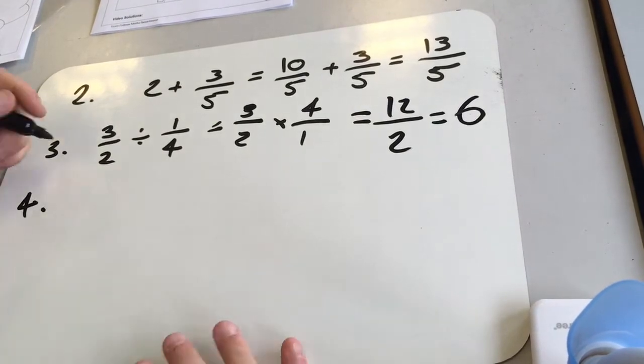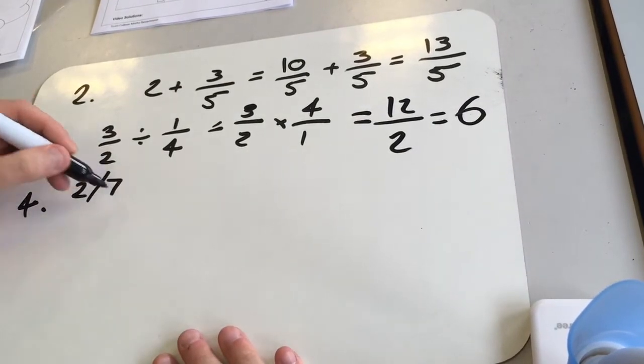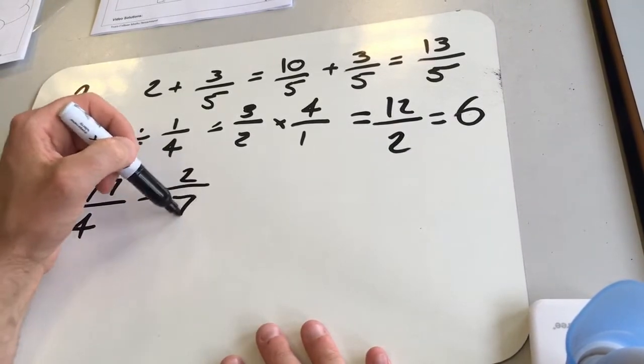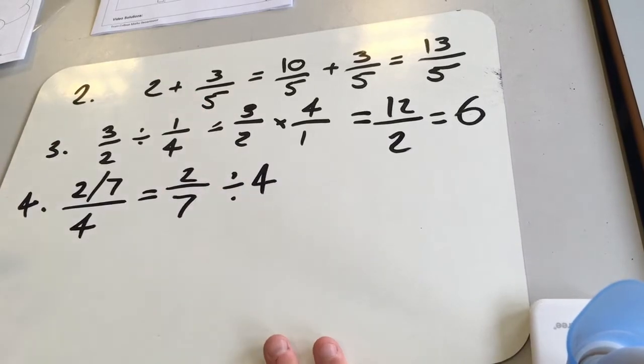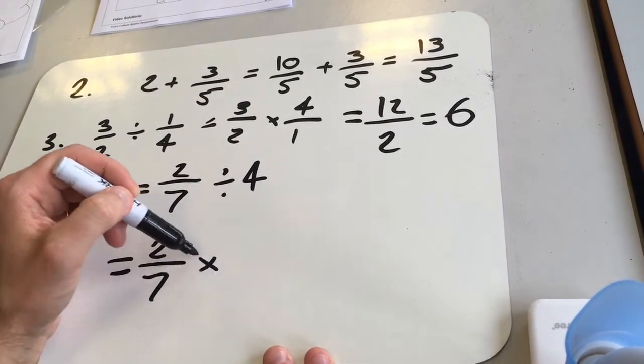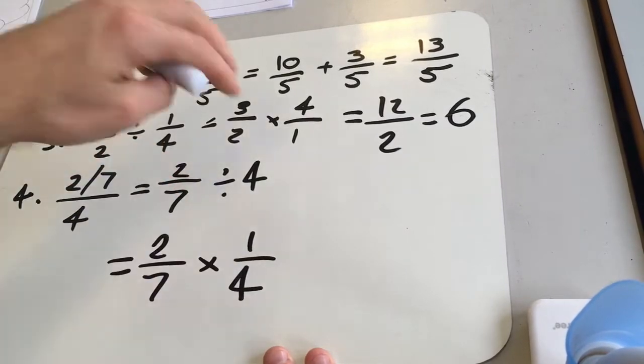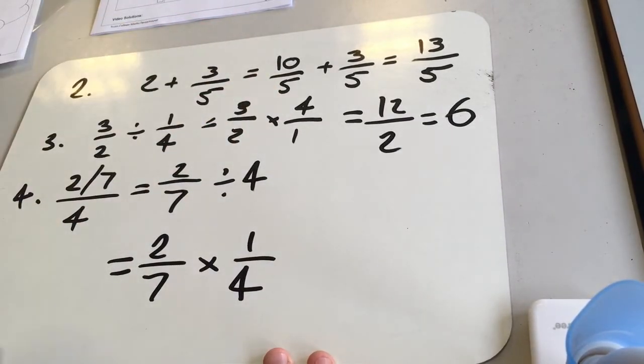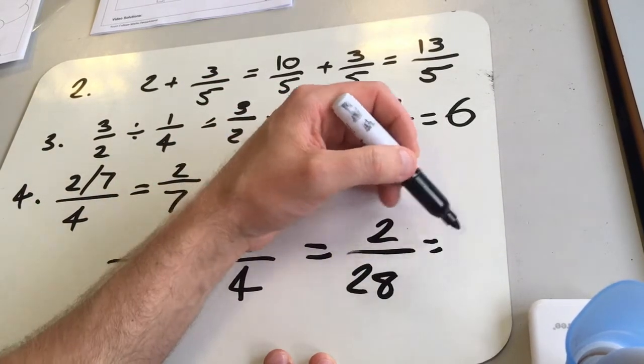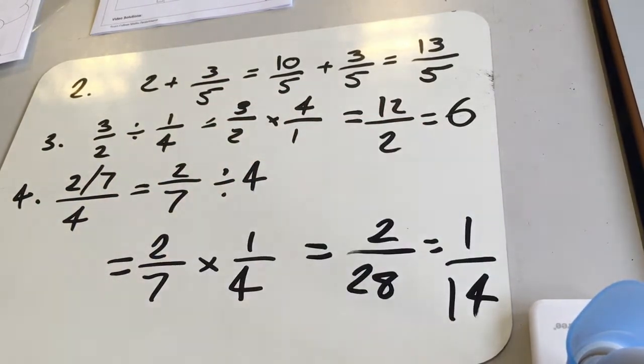Okay, next one, 2 over 7 over 4. These always look quite horrible, so we're going to write this out instead as 2 over 7 divided by 4, which is the same as 2 over 7 times 1 over 4. Doing the same thing, flipping the fraction, which gives us 2 over 28, which is 1 over 14.